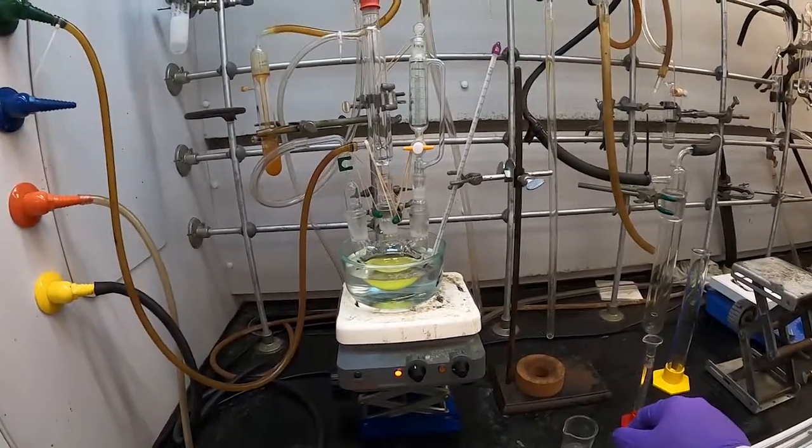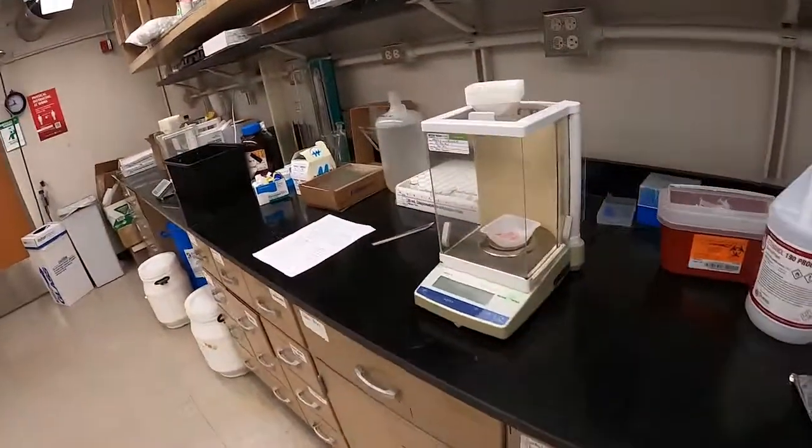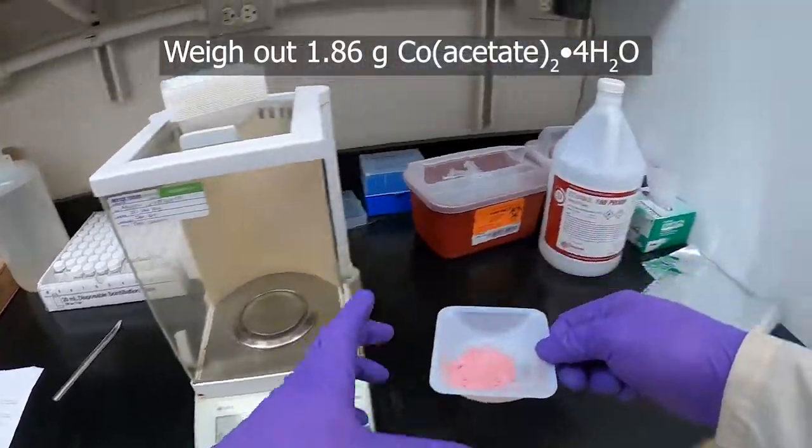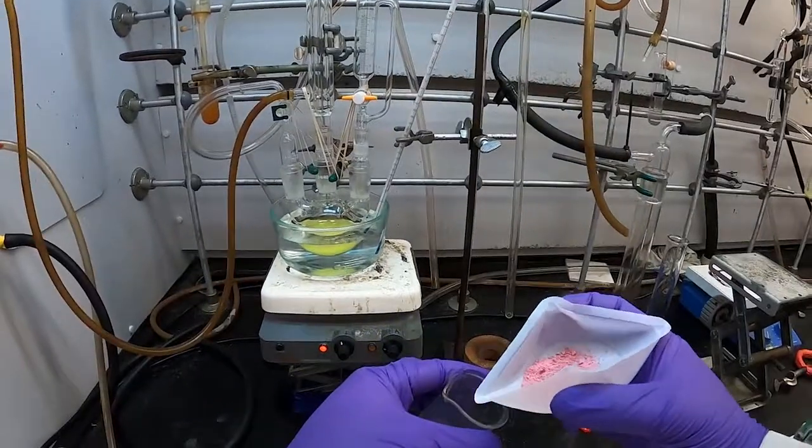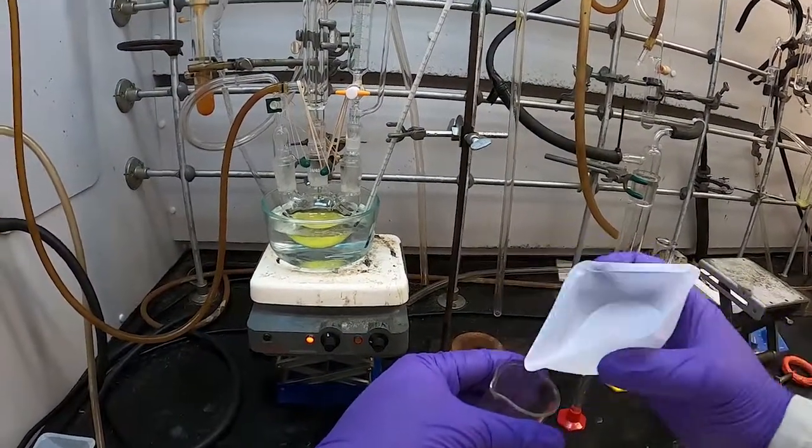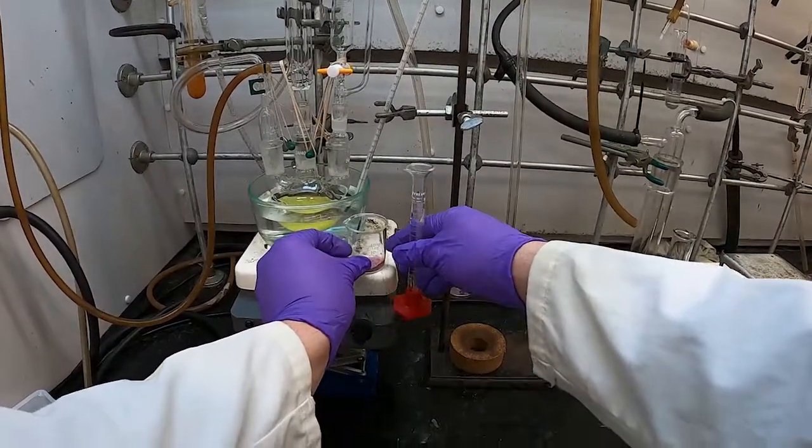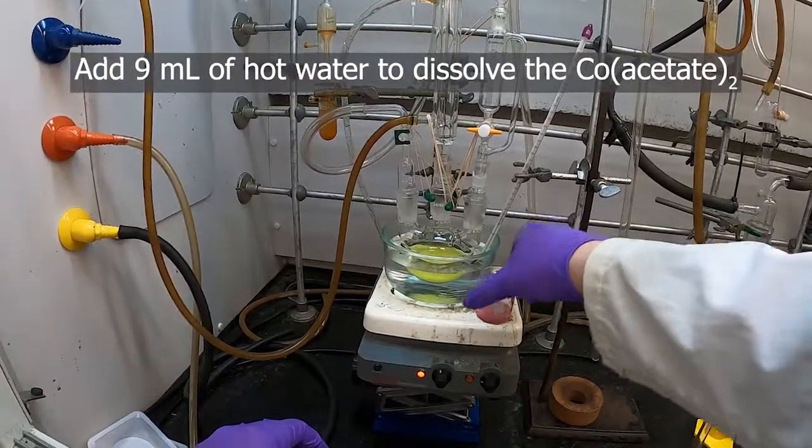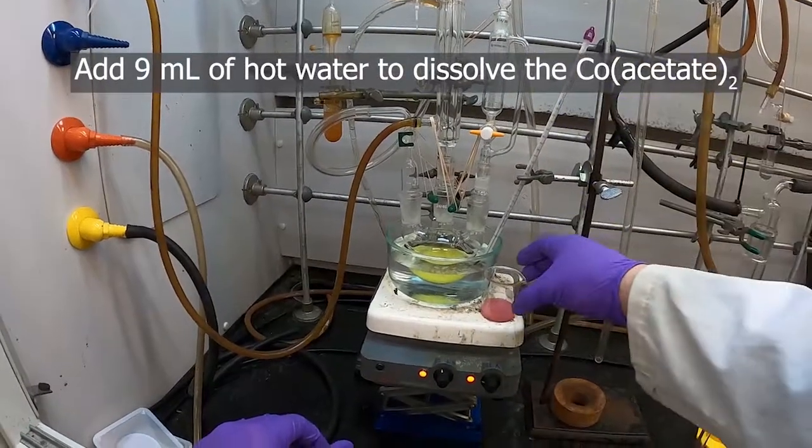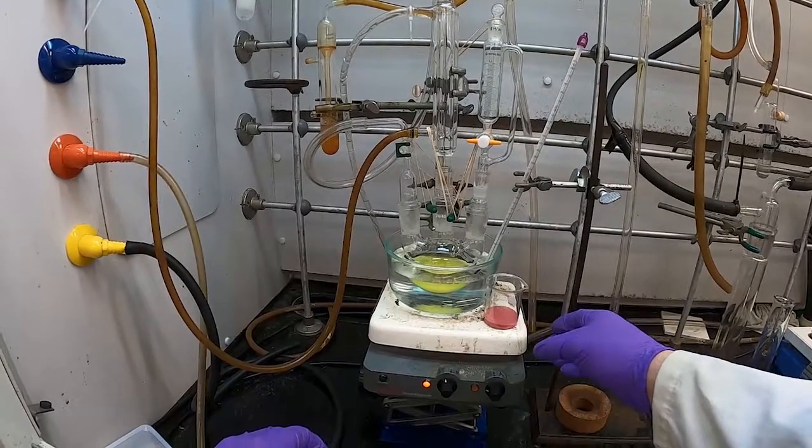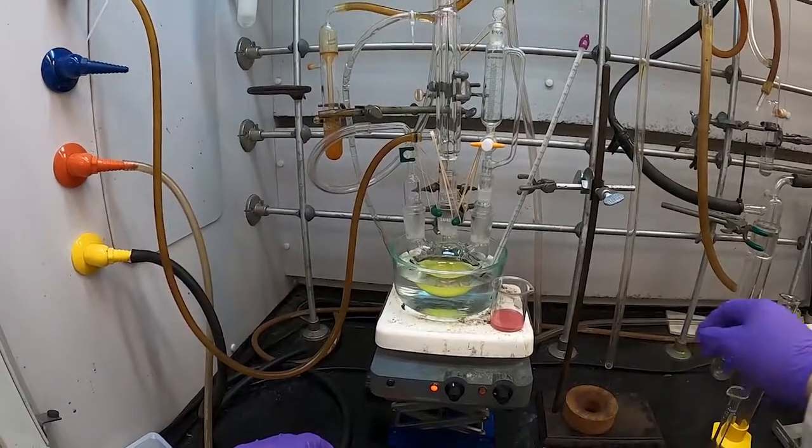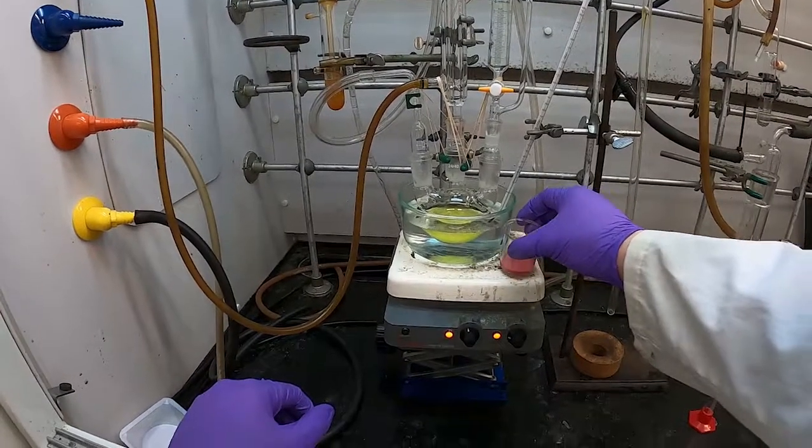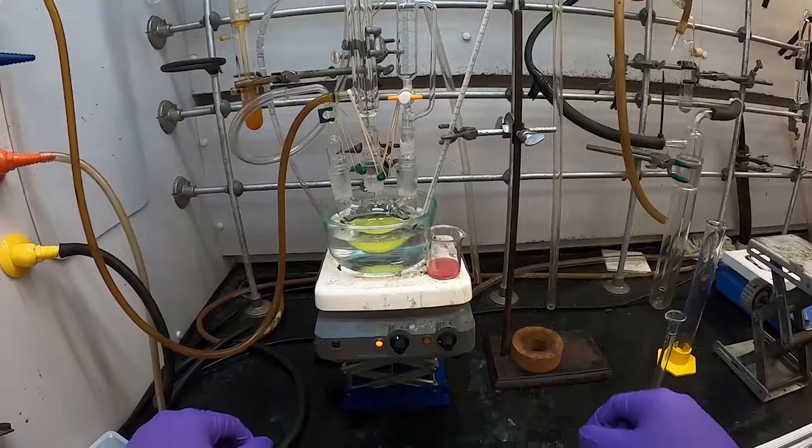So while we're waiting for that to heat, we can also prepare the cobalt acetate solution that we need. So I've got here on the balance the 1.86 grams of cobalt acetate tetrahydrate that we need. Put that in this little beaker here, and then add to it 9 milliliters of water. And we'll heat that to get it all to dissolve, and then that will be going into our addition funnel.